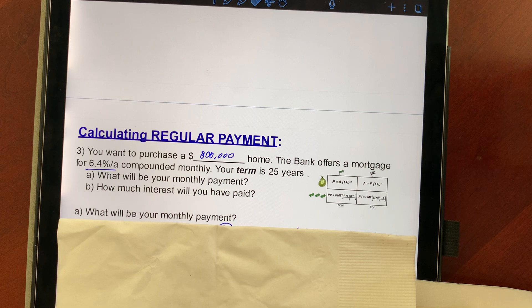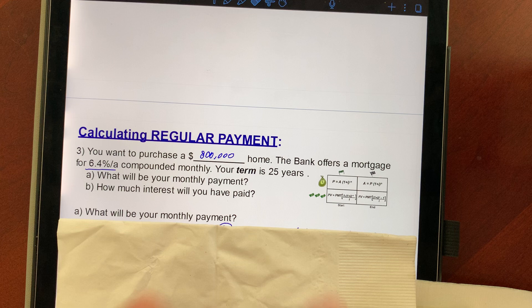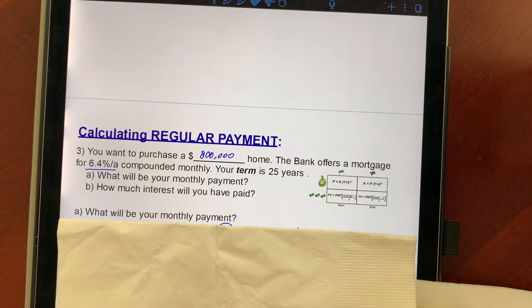Your term is how long you're going to take to pay back your mortgage. And in Canada now, the maximum you can get is 25 years. Of course, the longer you take to pay, the less you're going to pay per month. But you're going to end up paying more interest.